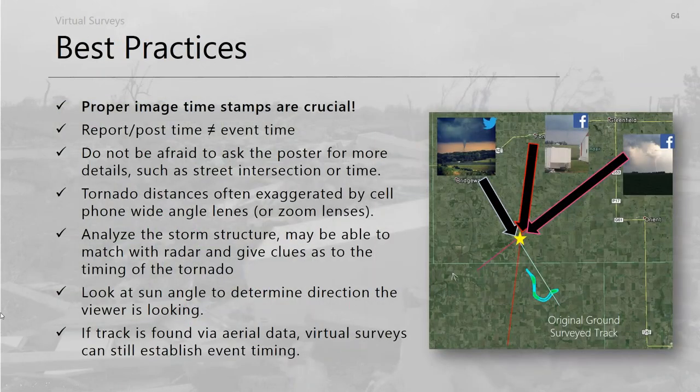Best practices for virtual surveys: try to get image timestamps — modern storm chasers often embed them directly in videos. Don't be afraid to ask for more information. Be aware that tornado distances in photos can get exaggerated from wide-angle phone lenses or zoom lenses on advanced cameras. Look at other storm features for timing clues, and even the sun angle can help determine where the viewer is looking.